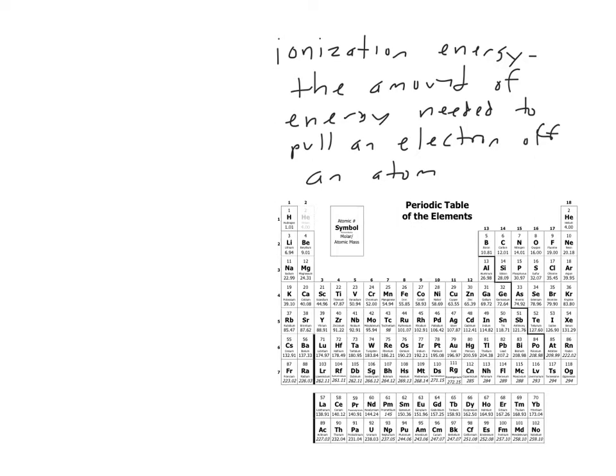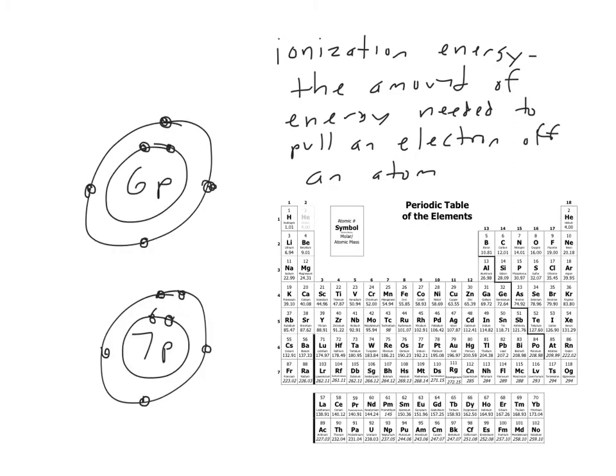Like before, we're going to compare two atoms. In this case, carbon and nitrogen. So this is the Bohr model for carbon, this is the Bohr model for nitrogen. And I'm going to ask myself, which one of these atoms is going to have a higher ionization energy? In other words, which one's going to be harder to pull an electron off?